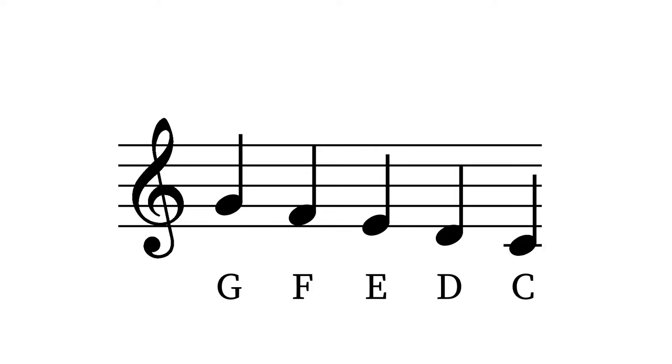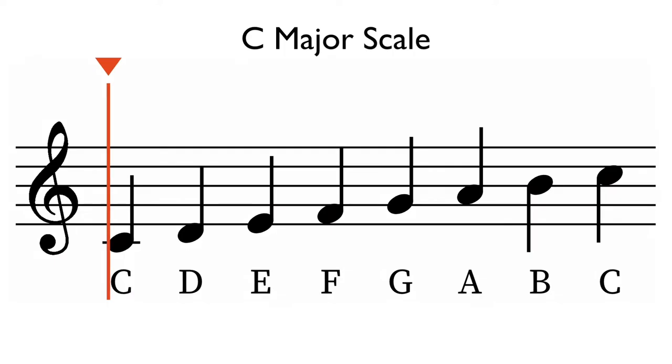So, moving backwards through the musical alphabet, we can determine the note on the first ledger line below the staff is C. Let's look at the C major scale on the treble staff, starting on the C below the staff.